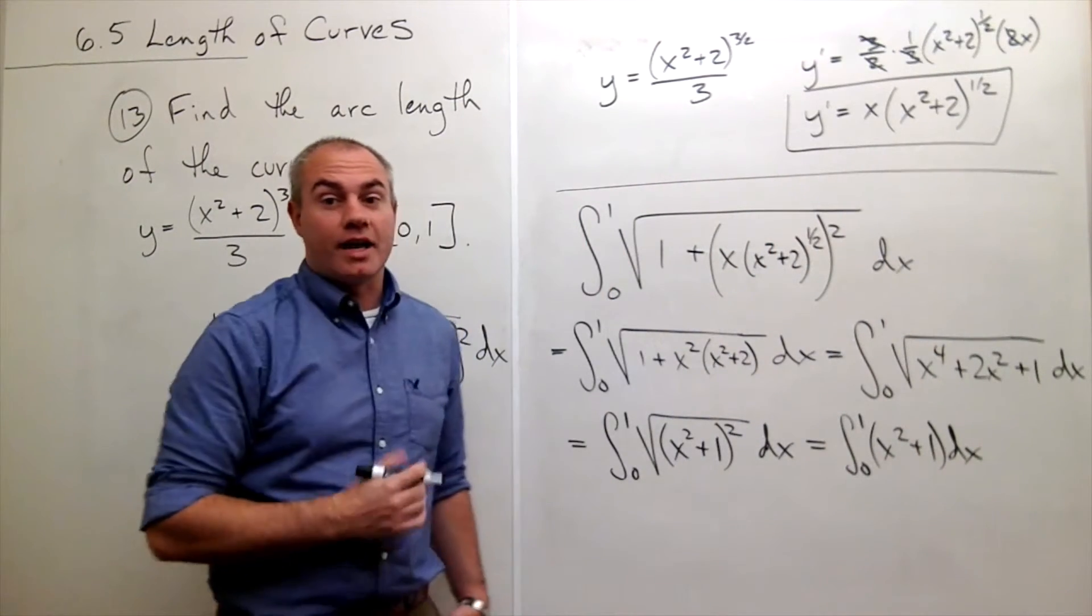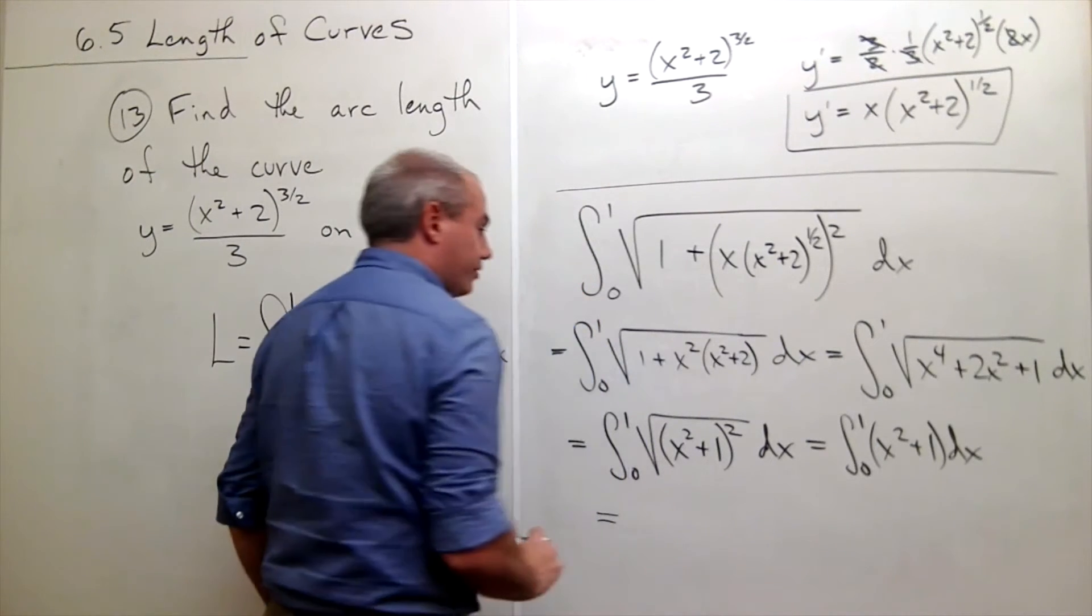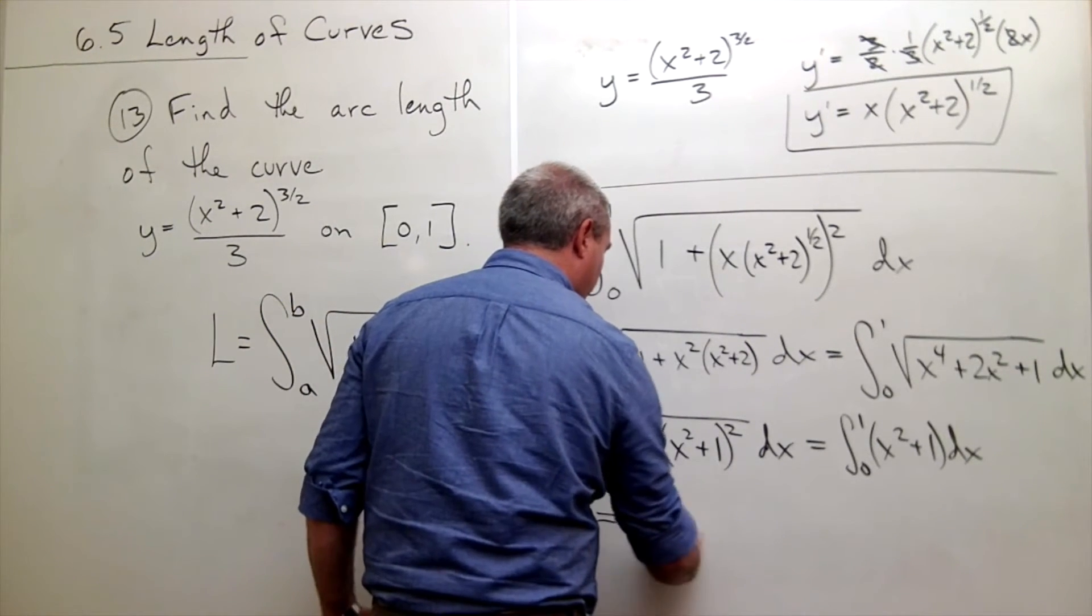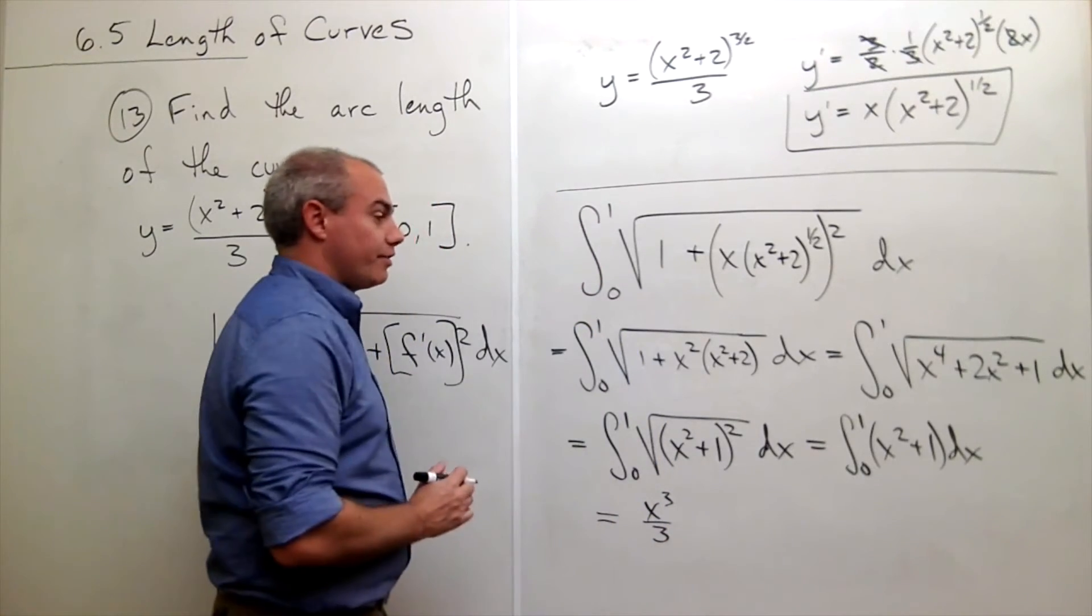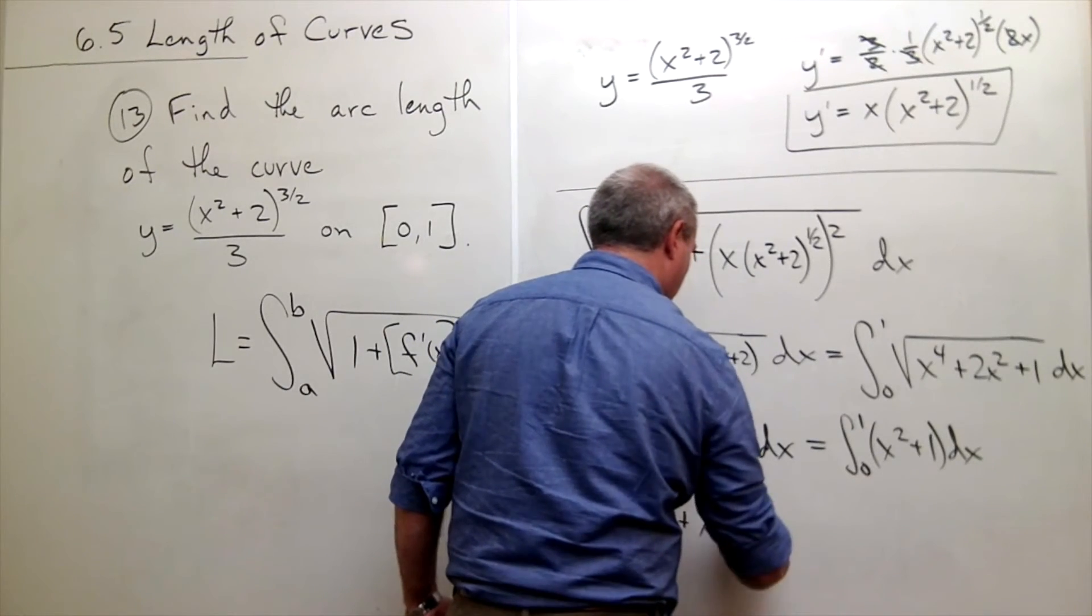And that's a nice thing that I can take an antiderivative of. So let's take the antiderivative. The antiderivative of x squared is x cubed over 3. The antiderivative of 1 is x, and that's evaluated from 0 to 1.